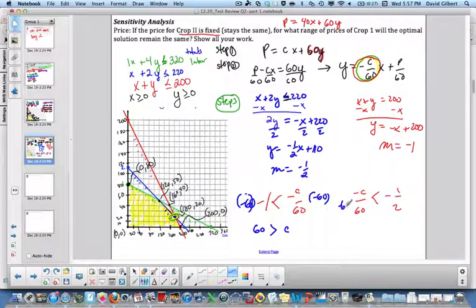Multiply both of these by negative 60—that cancels the negative and the 60. Multiply by negative 60, that becomes a positive, and 1/2 times 60 is 30. I have to switch the inequality, so c has to be greater than 30.